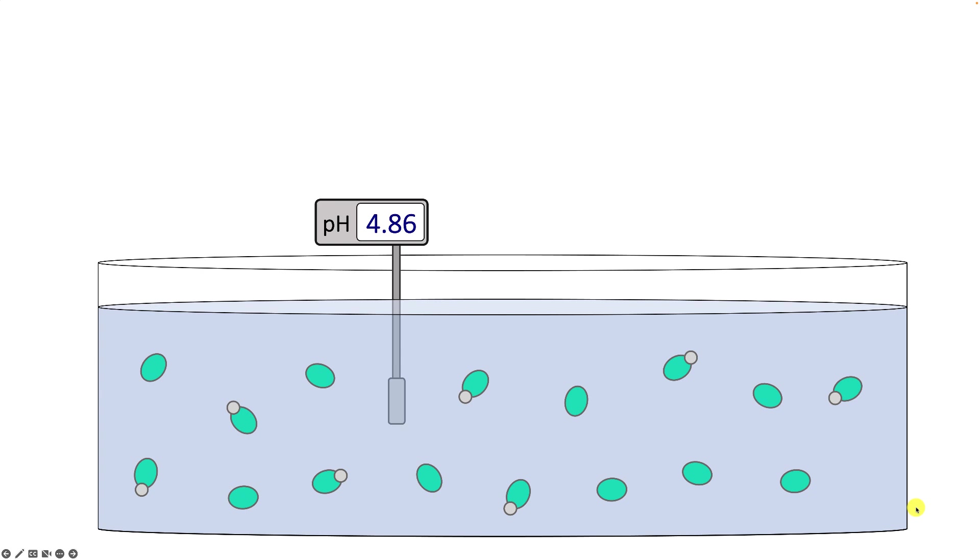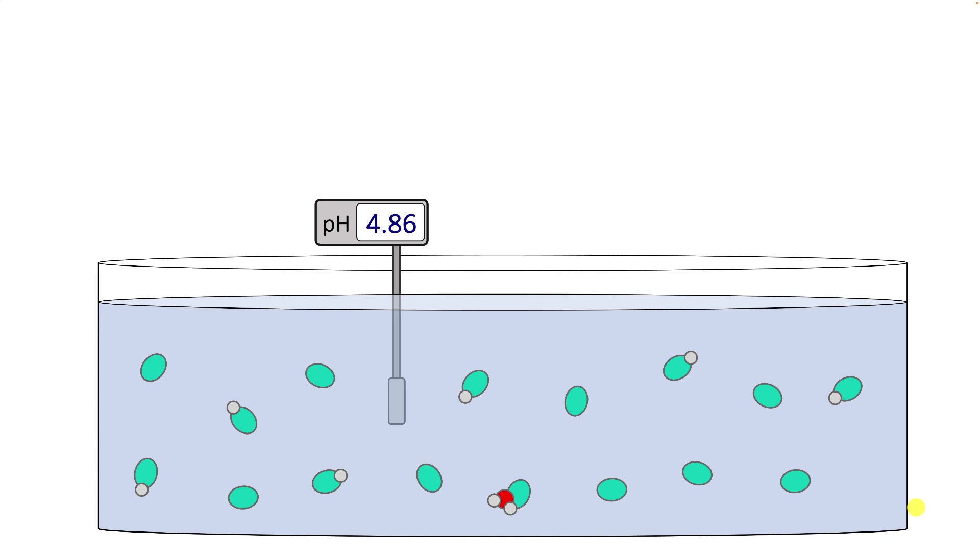Now we can do this again. If we add more strong base, more hydroxide ions enter the solution and encounter acetic acid molecules. Hydroxide reacts with acetic acid to make water and the acetate ion.